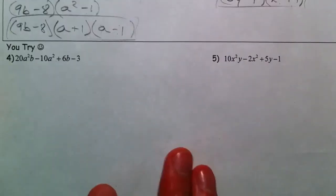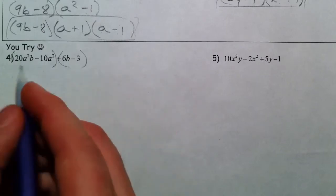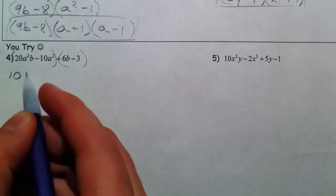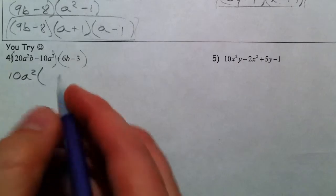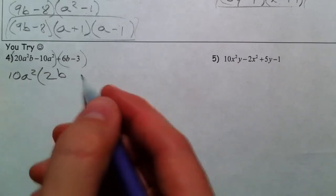You guys try the next few on your own. Pause it. Pull out a 10. Pull out an a squared. 20 divided by 10 is 2, and the b is left.